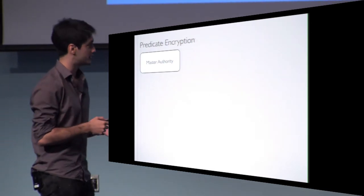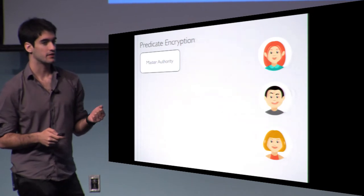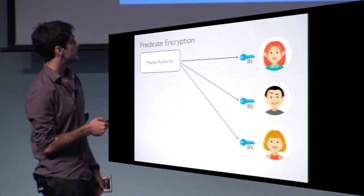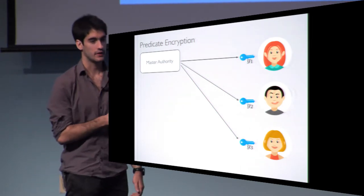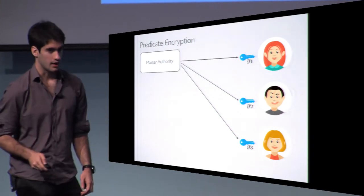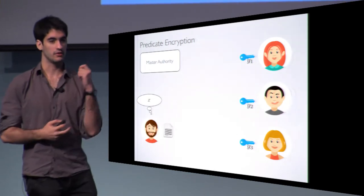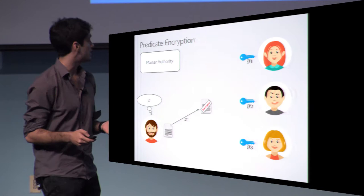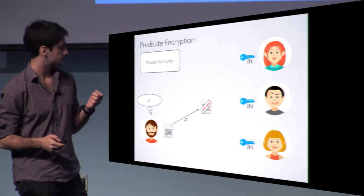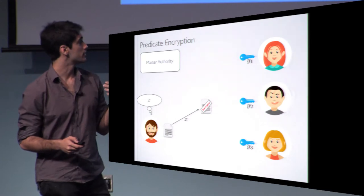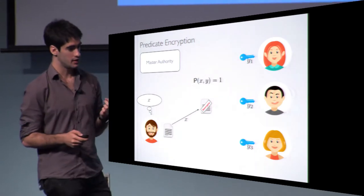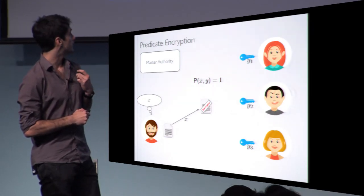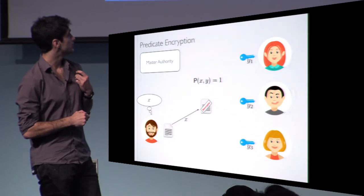In predicate encryption there is a master authority and some users. The master authority provides secret keys to users, and every key is associated to a certain value Y that can be different for every user. Everyone is allowed to encrypt, and when encrypting you need to think of a value X, producing a ciphertext associated to X. The requirement is that only users owning a key such that a certain predicate involving X and the key's value Y is true will be able to decrypt.